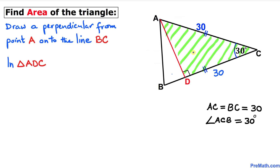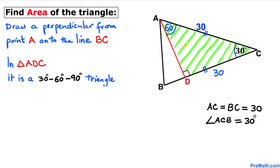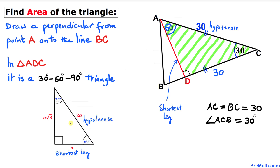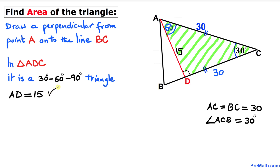Now let's focus on triangle ADC. We know that angle ACB is 30 degrees and angle ADC is 90 degrees, so the remaining angle has got to be 60 degrees. This is a 30-60-90 triangle. In such a triangle, the hypotenuse is always twice as much as the shortest leg. In our case, AC is the hypotenuse at 30 units, so the shortest leg DC is 15 units. Thus our length AD turns out to be 15 units.